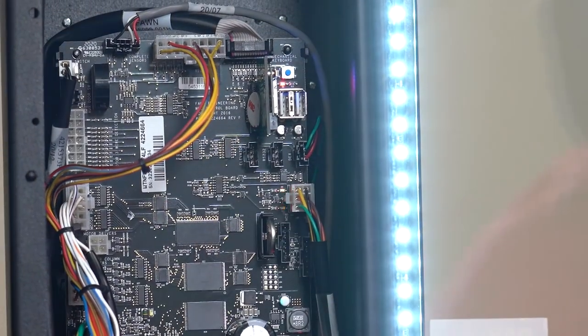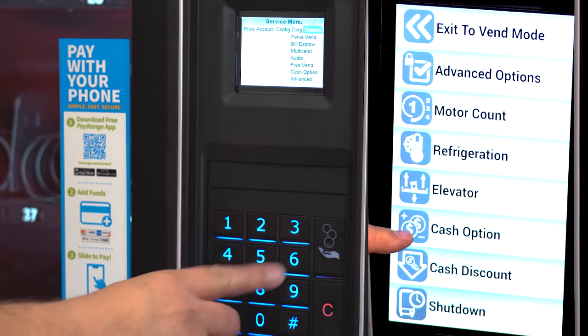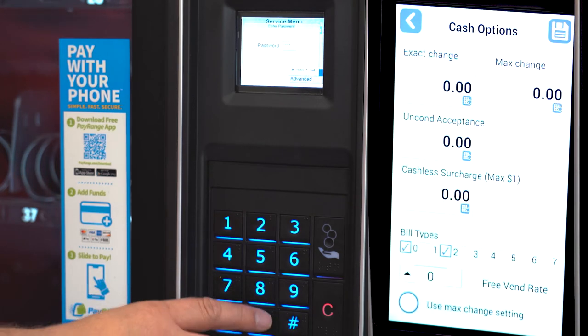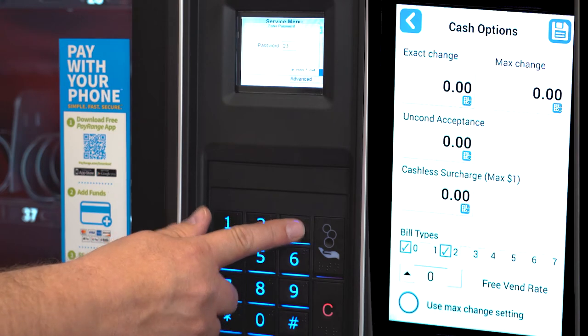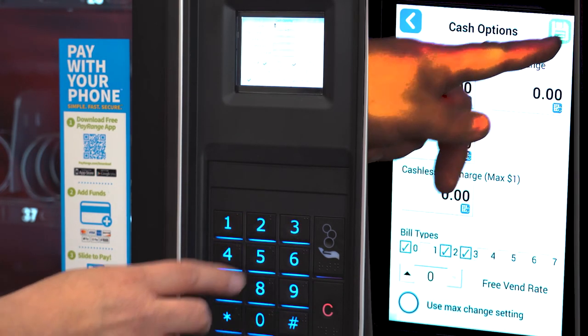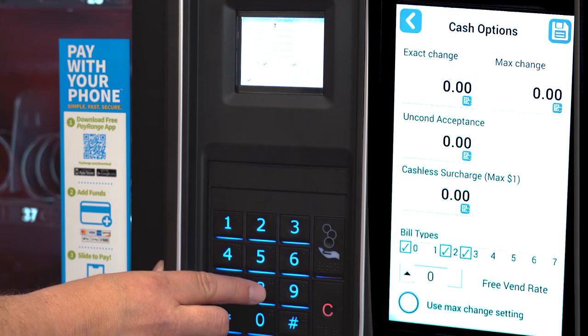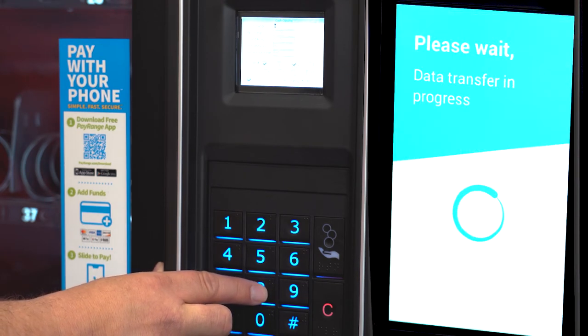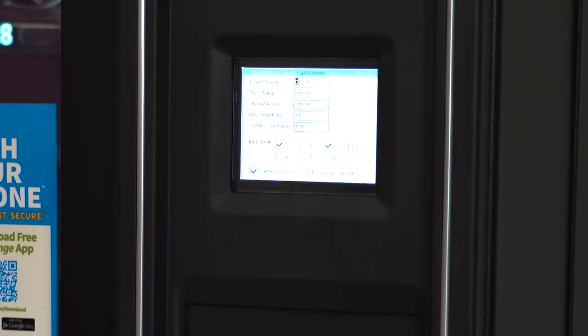Now the bill validator is ready to accept ten dollar bills but the control board is not. Place the machine in service mode. Then go to the options menu, then cash options. The password is 2314. Check number three to accept ten dollar bills. Check four if you would like to accept twenty dollar bills. Press pound to save. Press star to back up.